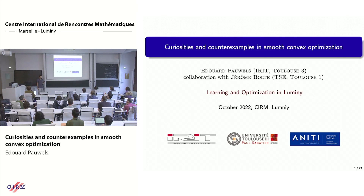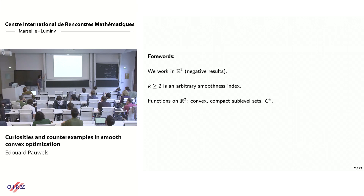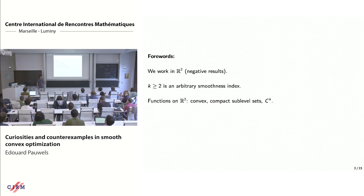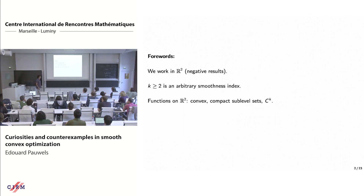I'm going to talk about counter-examples in optimization; this is joint work with Jérôme Bolt, who is also in the room. We will be working in R2 — not a limitation but a feature, since we consider negative results, so the more assumptions, the stronger the result. Throughout the presentation, k will be an integer greater than 2 representing a smoothness index, and we will consider convex functions on R2 with compact sub-level sets, smooth and continuously differentiable up to order k. So k could be fixed right now, like 10 or 50, and it will be fixed throughout the presentation.